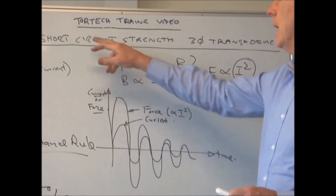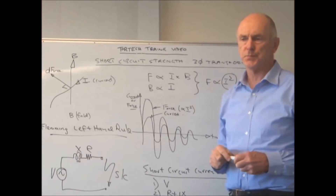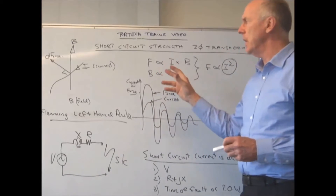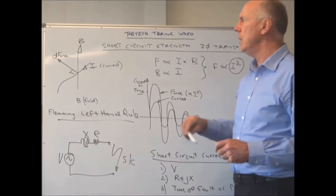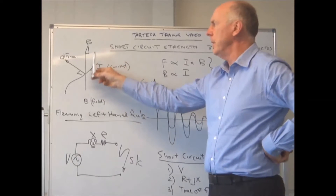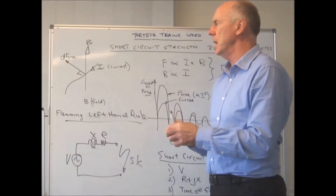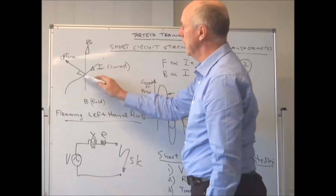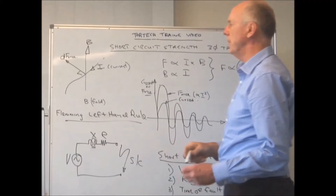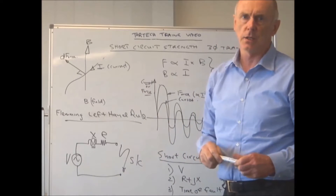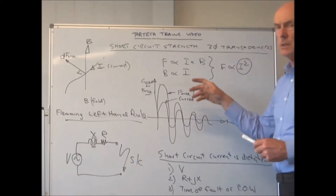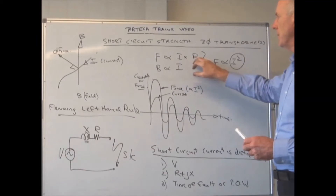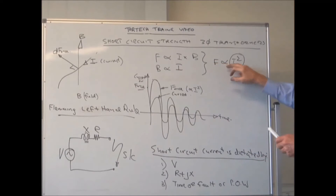Today we're going to talk about short circuit strength of three-phase transformers. The work is based around Fleming's left-hand rule. You can see the magnetic field, the current flowing, and the resulting force — the current is perpendicular to the field, perpendicular to the direction of the force. The force is proportional to the current times the field, and since the field is proportional to the current, the force is proportional to the current squared.